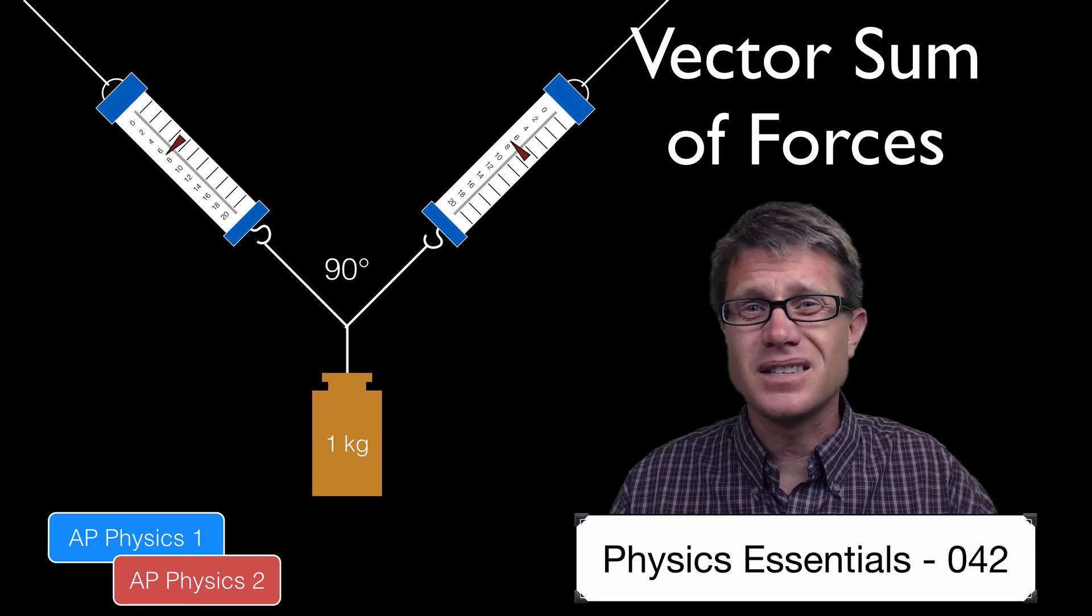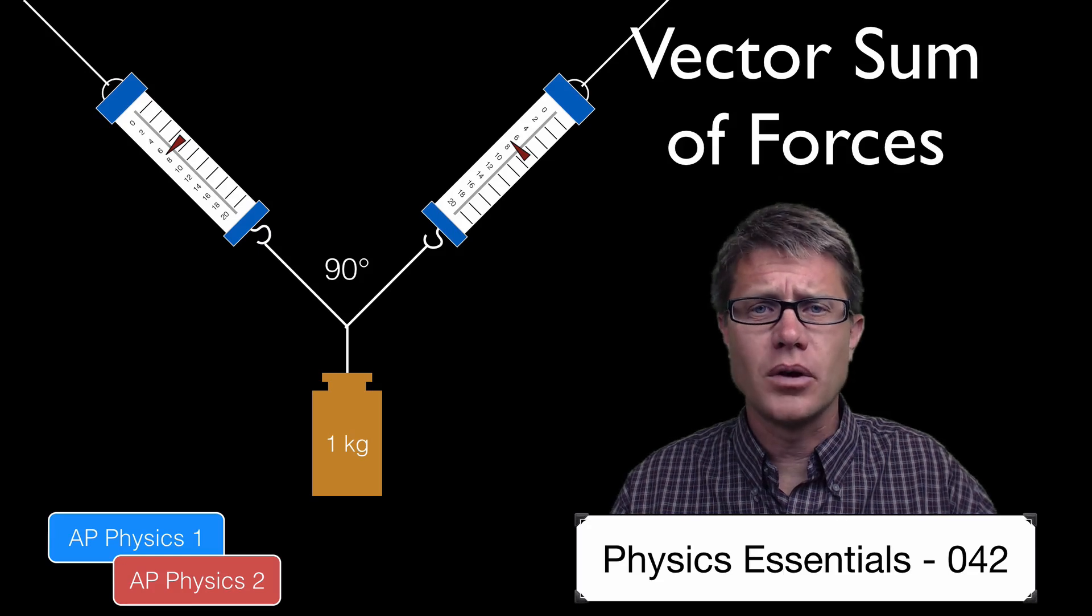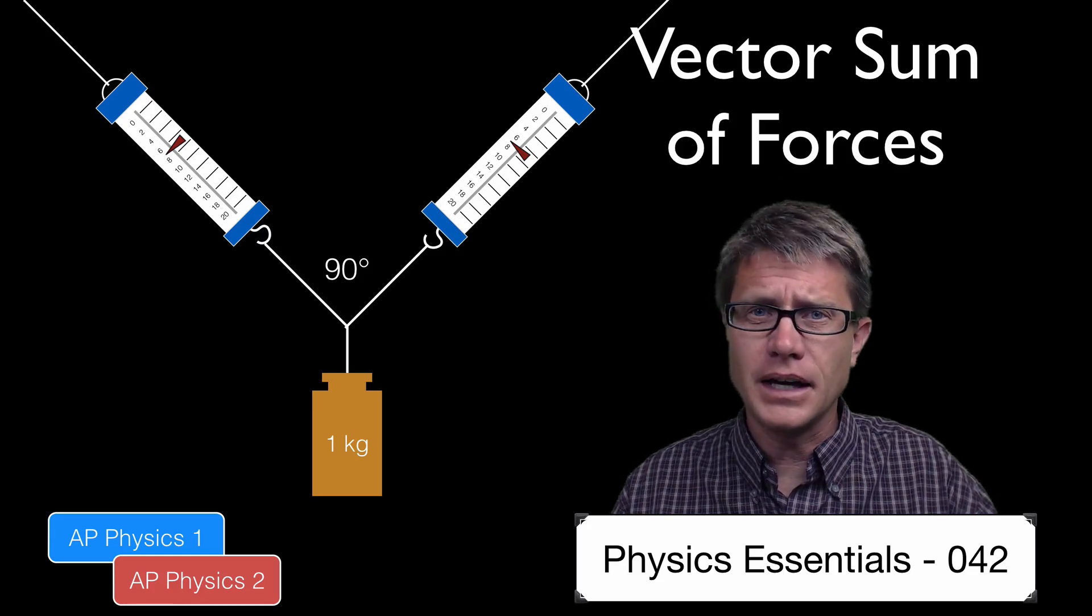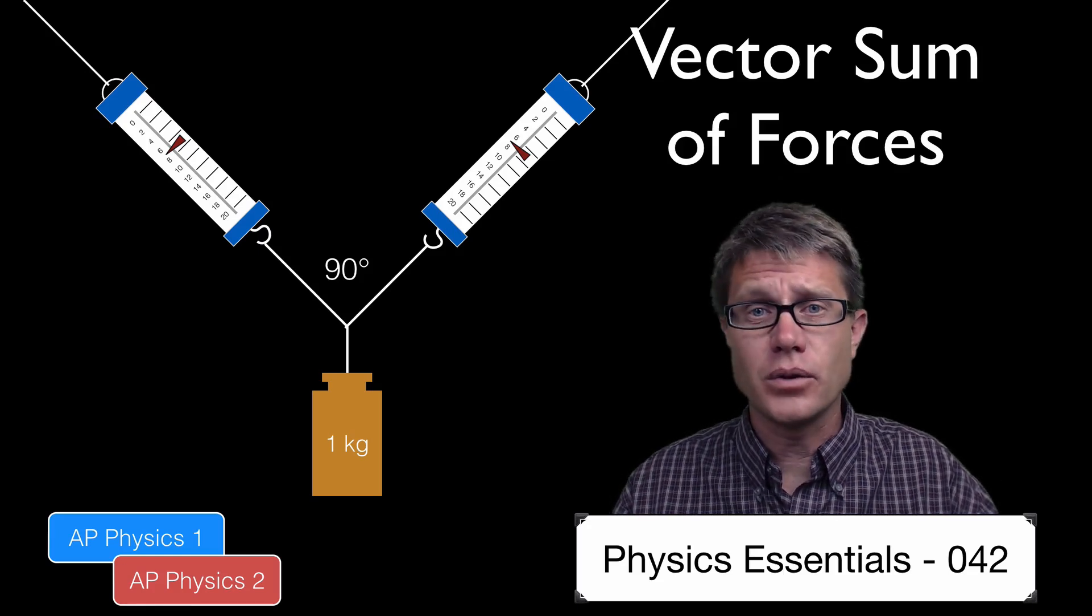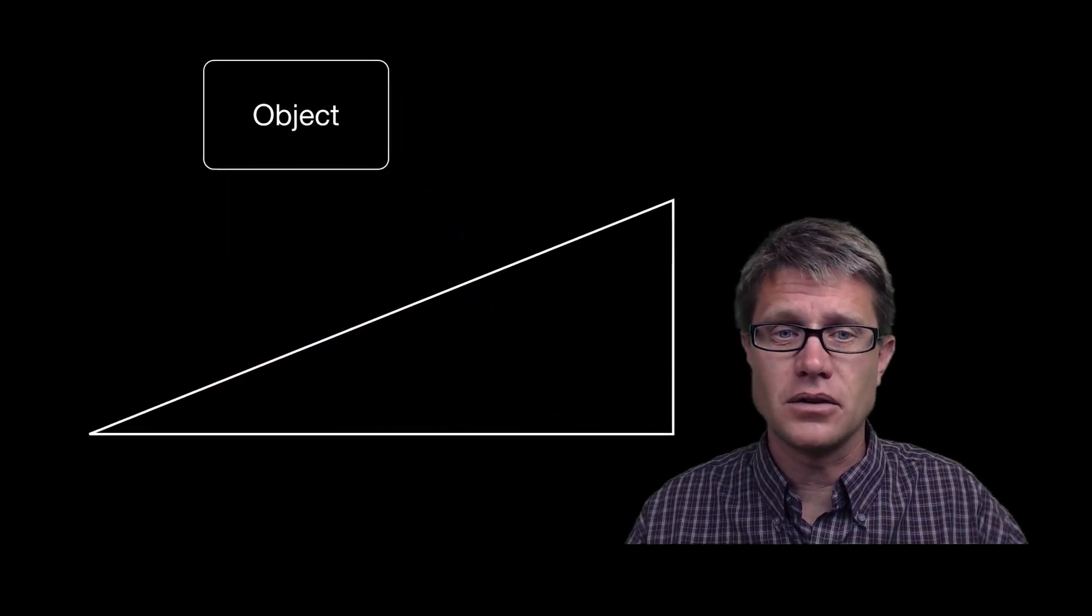Well it ends up being around 7.1. And that seems like a weird number. And the reason why is that we are applying those forces at a different angle. And so those are vector forces. And if you want to figure out the sum of those two forces we have to do a vector sum.